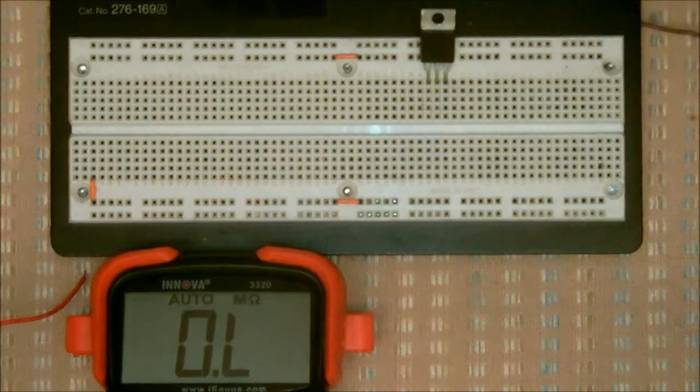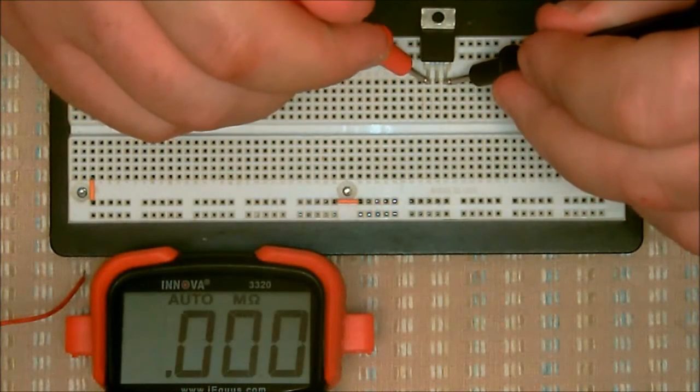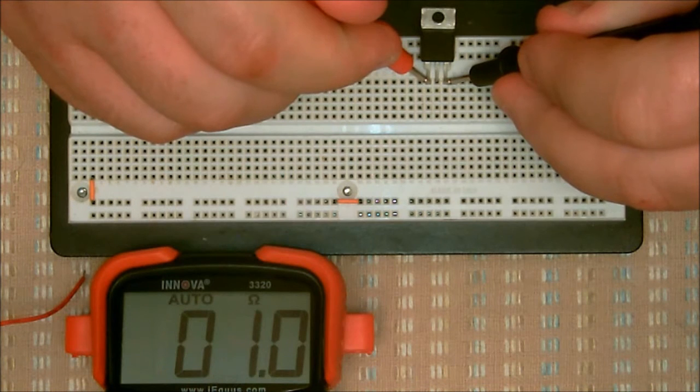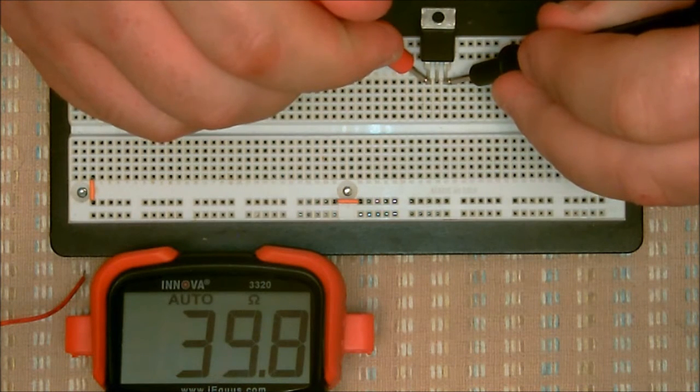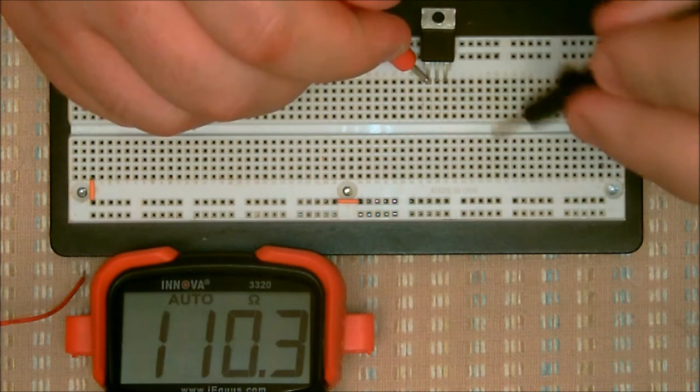You can put the positive lead on the gate and put your negative lead on the MT1. You should read some fairly low resistance like you do here. Not always, but in some cases you will. You can also reverse your leads between the gate and the main terminal 1. Again, you will see that you will get some low resistance. This is okay.